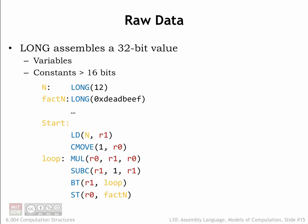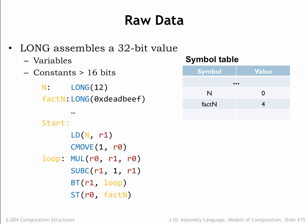Here we see a program that allocates and initializes two memory locations using the long macro. We've used labels to remember the addresses of these locations for later reference. When the program is assembled, the values of the labels n and factend are 0 and 4 respectively — the addresses of the memory locations holding the two data values.